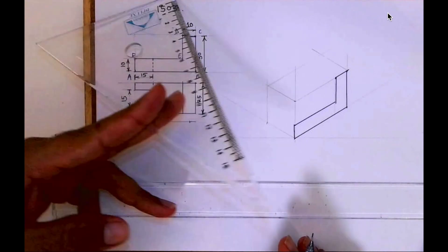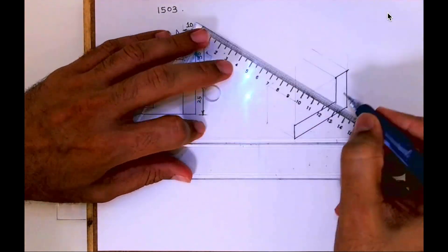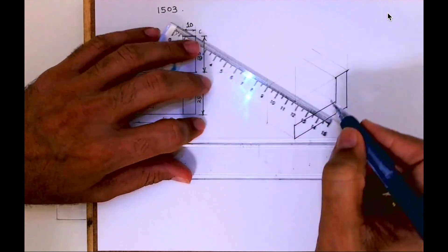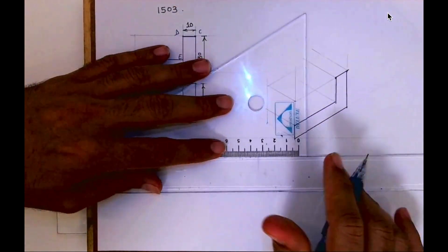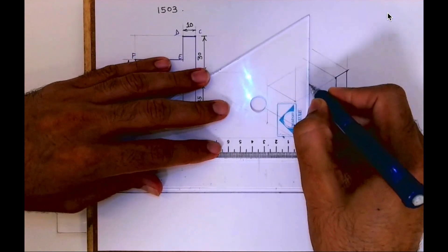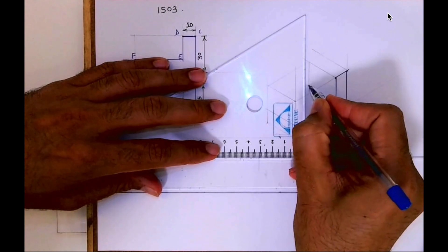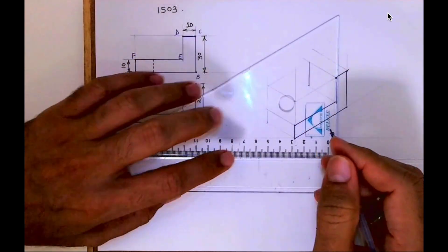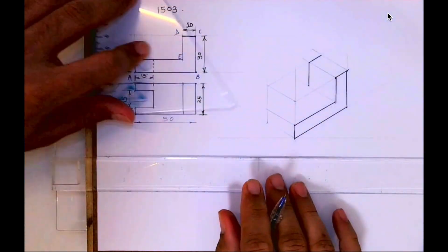Now the same thing is behind also, right? So how much do I have to go behind? I have to go behind by 25. Then I will draw a vertical line from here. See, this will be dark. This will be dark.